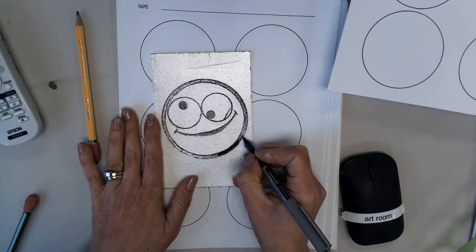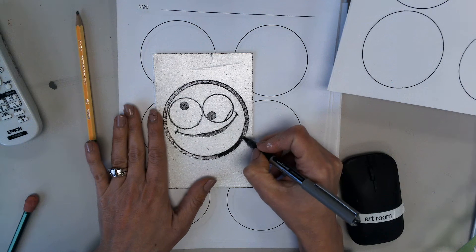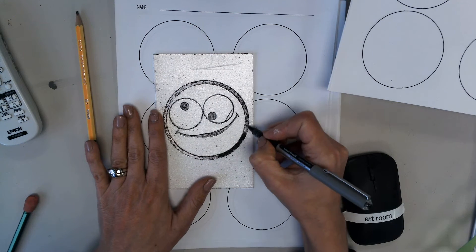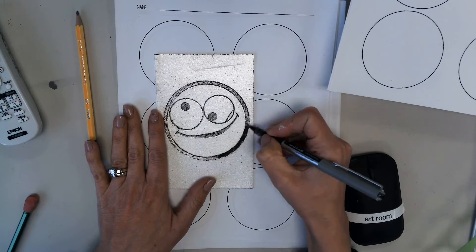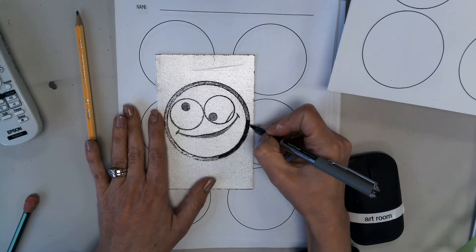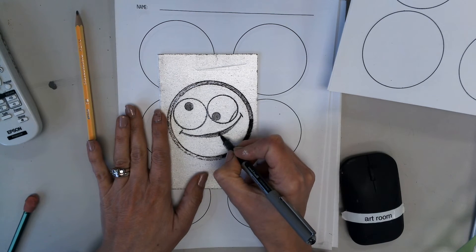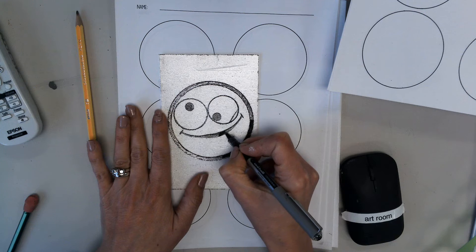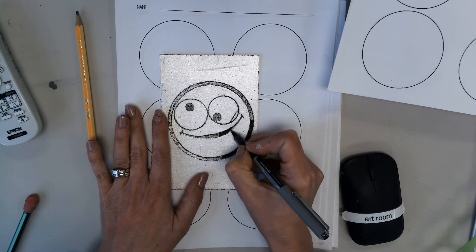Now here's where it gets kind of tricky to understand. Things that I'm coloring in black, when I do the printmaking, they actually show up as the color of the paper. So anything that is recessed or pressed down will not print.